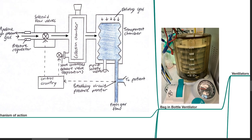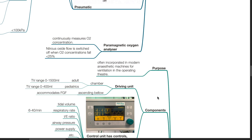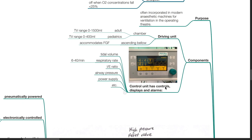Ventilators. Bag-in-bottle ventilator is often incorporated in modern anesthetic machines for ventilation in the operating theatre. Components: a driving unit and a control unit. The driving unit consists of a chamber and ascending bellows. The adult version of the chamber can hold up to 1.5 litres and the pediatric version up to 400 mL. Ascending bellows accommodate fresh gas flow. The control unit has controls, displays and alarms for tidal volume, respiratory rate ranging from 6 to 40 per minute, I:E ratio, airway pressure, power supply, ventilatory mode, etc.